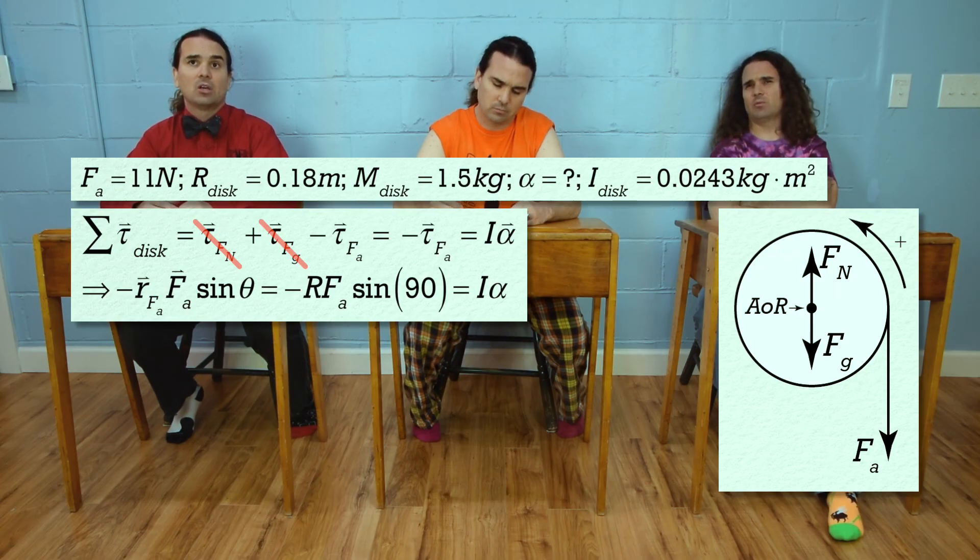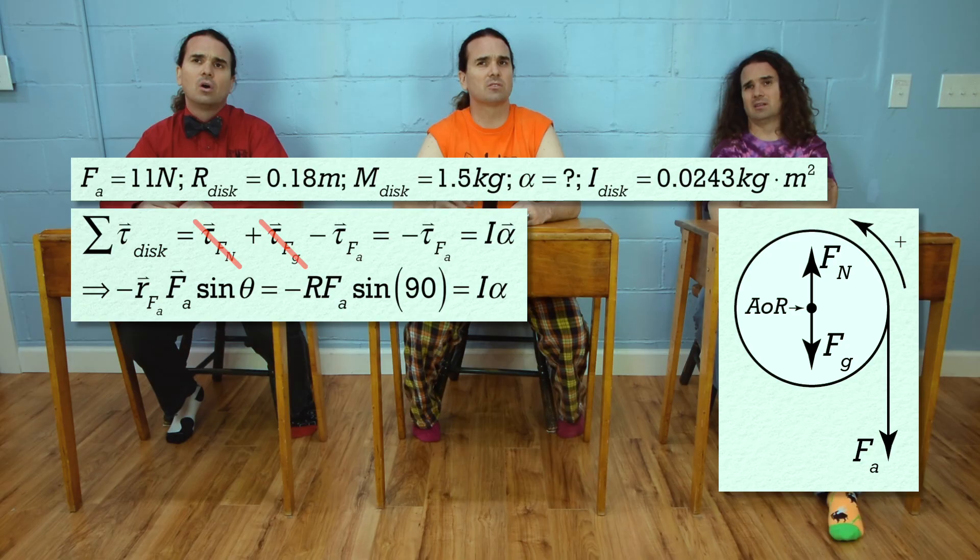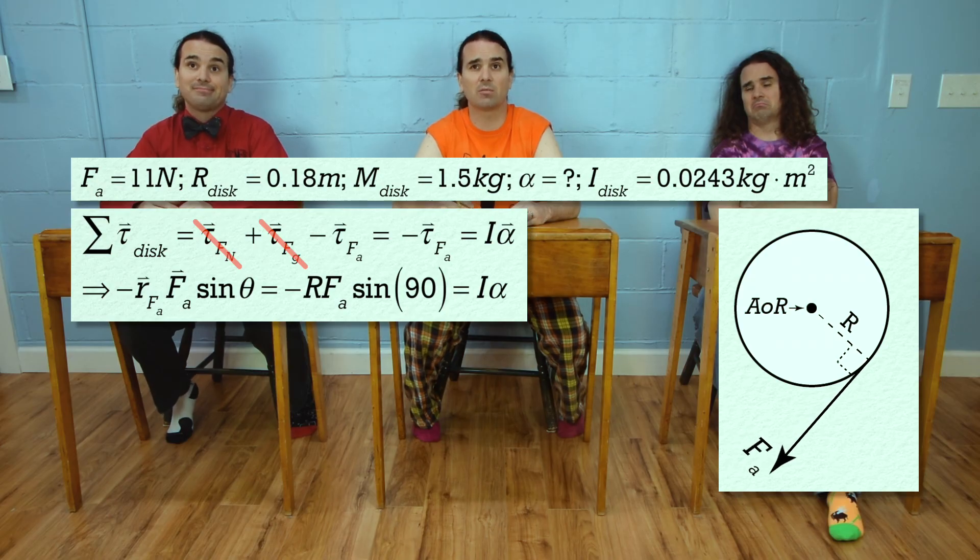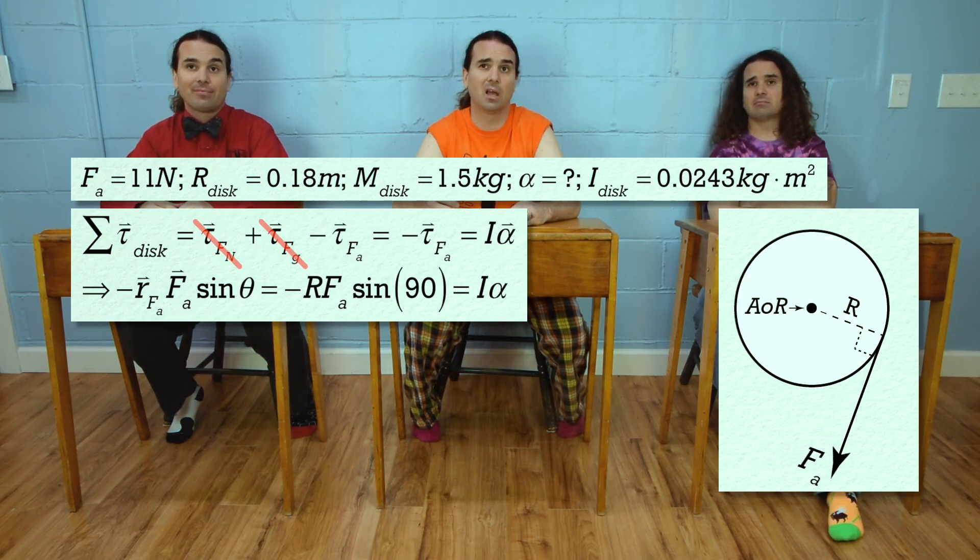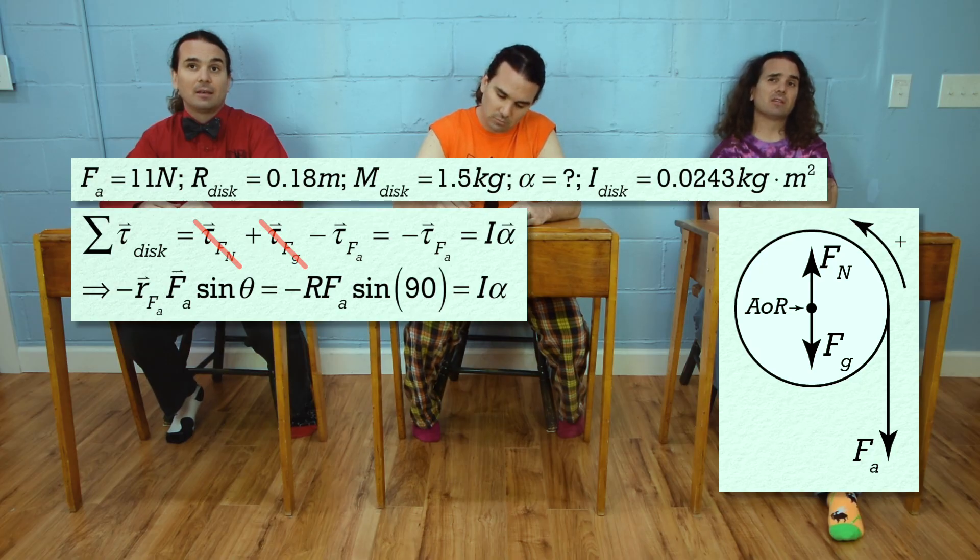The problem did not say which direction the force applied was in, so the angle could be anything, right? No, because the disk is a circle. No matter what angle the string is pulled at, the string will always be tangent to the circle and therefore the force will be at a right angle to the radius. Ok, so the angle has to be 90 degrees and the sine of 90 degrees equals 1.